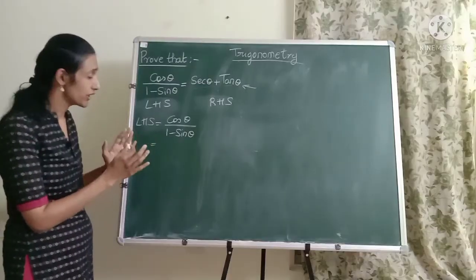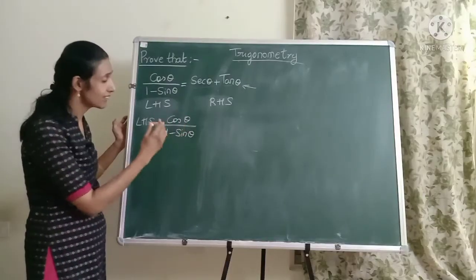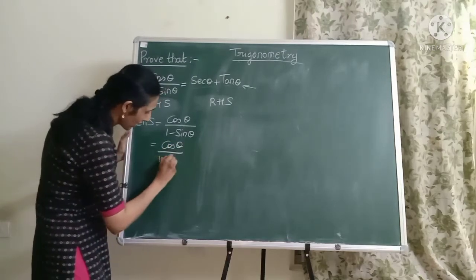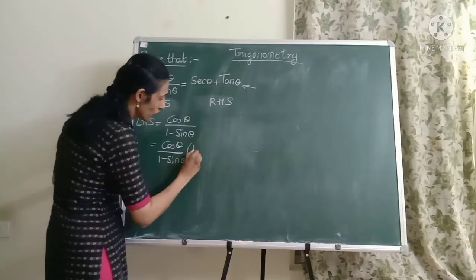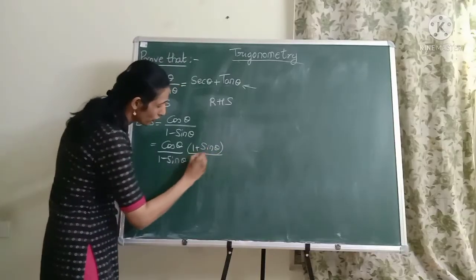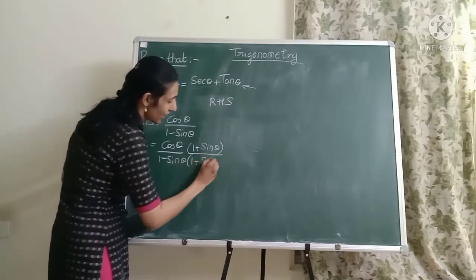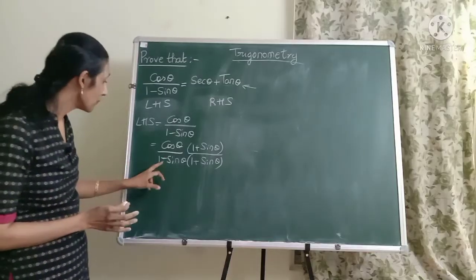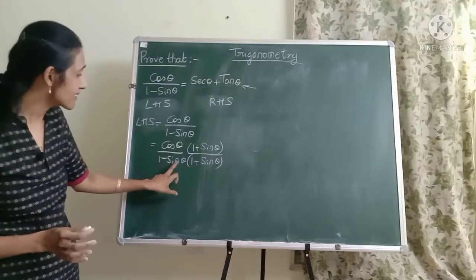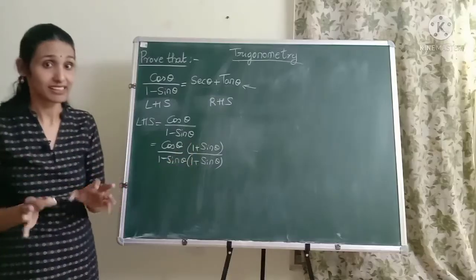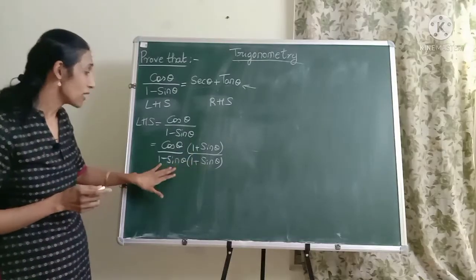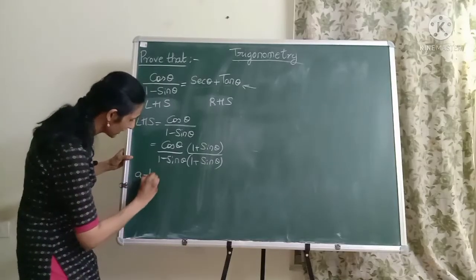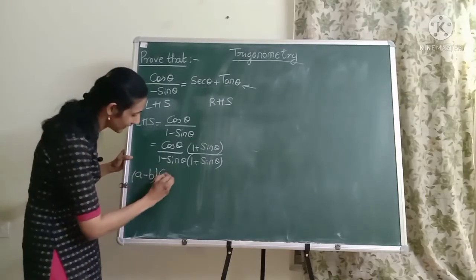So what we are going to do here is multiply and divide this expression by 1 plus sin theta. Now why we are choosing this you will know very soon. So what are you going to do? You are going to multiply and divide by 1 plus sin theta. Now what is happening is that here you have 1 minus sin theta and 1 plus sin theta. Now does this type look very familiar to your friends? Yes. Have you come across this before? Just have a look at this identity.